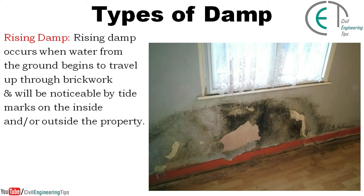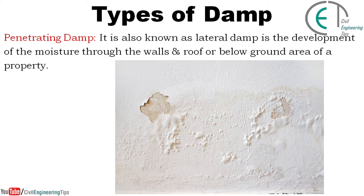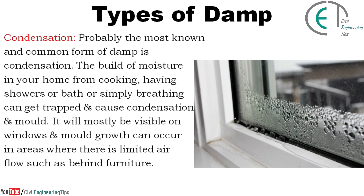There are three types of damp. The first is rising damp, which occurs when water from the ground begins to travel up through brickwork and will be noticeable by tide marks on the inside or outside of the property. The second is penetrating damp, also known as lateral damp, which is the development of moisture through walls, roofs, or below-ground areas. The third is condensation — the most common form — caused by built-up moisture from cooking, showers, baths, or simply breathing, which gets trapped and causes mold.